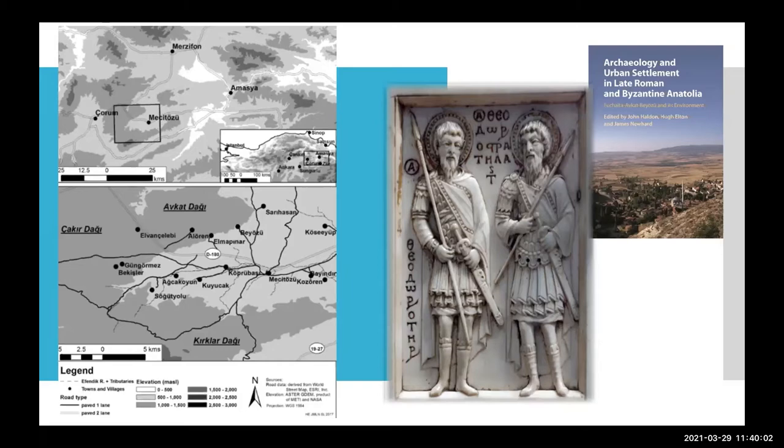AFKAT itself probably lies too far inland for moving grain to the coast and then shipping it elsewhere. But it is, on the other hand, close to several major military bases near the new frontier, and armies need grain and livestock.